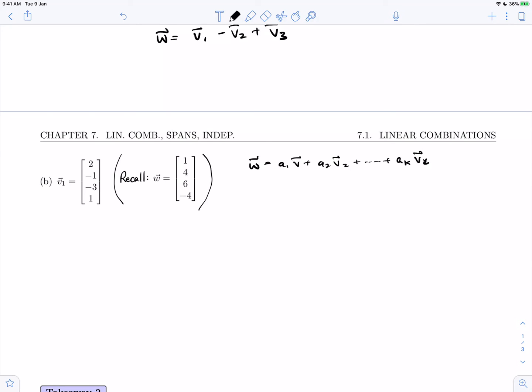But what happens if there's only one vector? What is a linear combination of a single vector? A linear combination of a single vector is a scalar multiple. That's important to realize: a linear combination of a single vector amounts to being a scalar multiple.